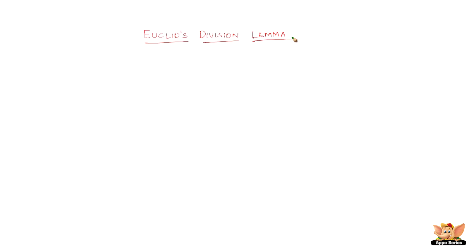But before that, the word lemma is kind of new to us. So let's just get done with understanding what it means. What does the word lemma mean? A lemma is a proven statement which is used to prove other statements. That's pretty much it. So don't confuse yourself over lemma.